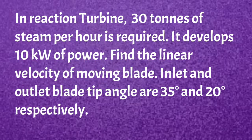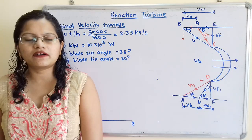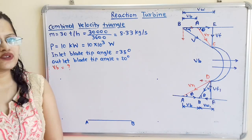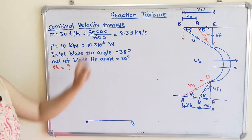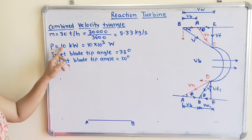Now we will solve a problem. In a reaction turbine, 30 tons of steam per hour is required, and it develops 10 kW of power. Find the linear velocity of the moving blade. The inlet and outlet blade tip angles are 35 degrees and 20 degrees respectively. Mass M is 30 tons per hour, converting to standard units: 30,000 kg divided by 3,600 seconds equals 8.33 kg/s.